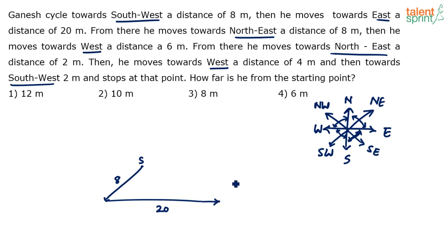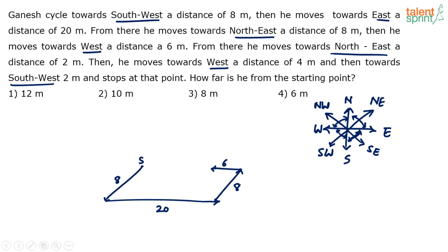Going with that assumption: from there he moves northeast a distance of eight meters. These two slant lines are parallel to each other. Then he moves towards west a distance of six meters — the 20-meter line and the six-meter line are parallel. He stops here. Then northeast a distance of two meters at the same 45-degree angle. Then west again a distance of four meters. Then southwest — all these slant legs are parallel.